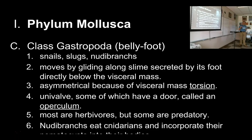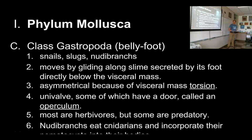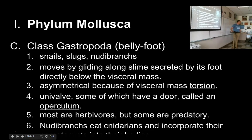Some snails have a little door called an operculum — when they pull their foot into the shell, a piece of shell on part of their foot closes it up so they have shell everywhere. Not all snails have an operculum, but some do. Most gastropods are herbivorous, using that filing tongue to crawl around on plants and file away leaves. But some are predatory — some large marine snails are serious ambush hunters, waiting for prey to come close before grabbing it with very fast-moving mouthparts.